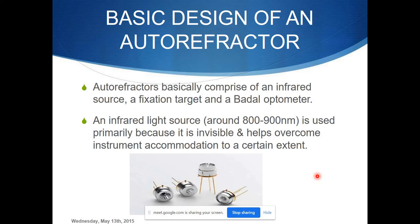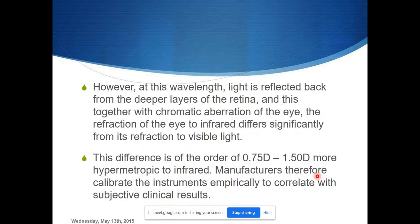Instead of two pinholes, later instruments used two light sources and two receivers. However, a drawback of using infrared light is that normal light reflects from the photoreceptors, whereas infrared goes deeper and reflects from deeper layers of the retina, varying the measured refractive error. This difference typically gives a variation of 0.5 to 1.5 diopters, mostly in the hyperopic direction. Manufacturers overcame this with mathematical calibrations that automatically adjust the result.